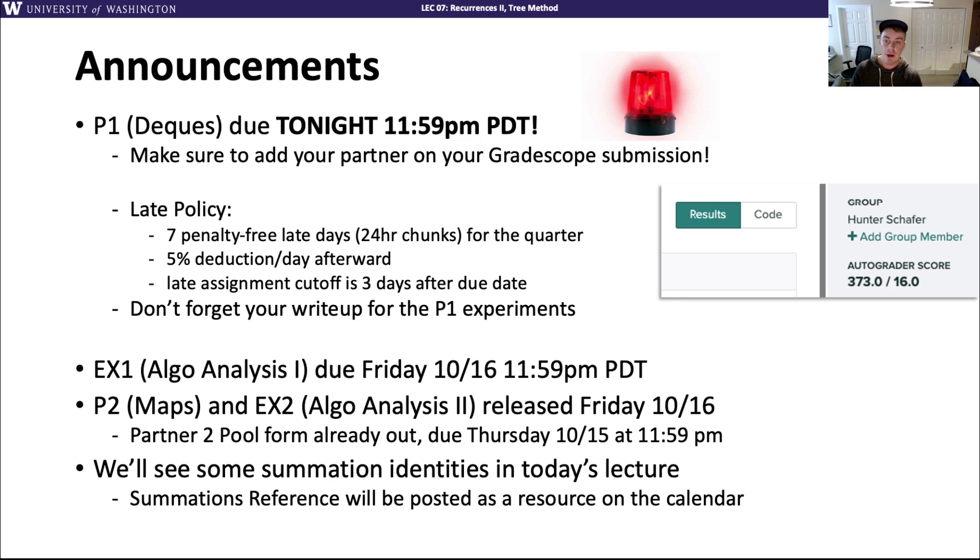Other announcements for dates coming up. Our first exercise practicing algorithmic analysis is due this Friday, 10-16 at 11:59 p.m. On Friday we'll also be releasing the next project and exercise. Project two maps is coming out this Friday but it's not due for two weeks. I've already opened up the partner pool for project part two. You're more than welcome to stick with the same partner that you had for P1 if you enjoyed working with that person.